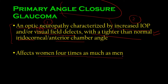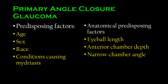Let's talk about the factors which predispose you to the development of angle closure glaucoma. These include age — the older you grow, the more chance of developing glaucoma. Sex — female to male ratio is 4:1. Race — there's a high chance if you're Southeast Asian, specifically people from Indonesia and Malaysia. Compare that to primary open angle glaucoma, where the most affected population was African Americans.